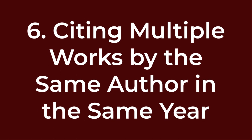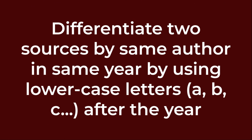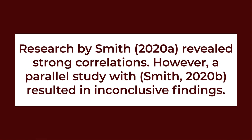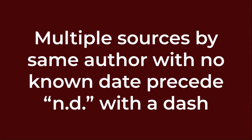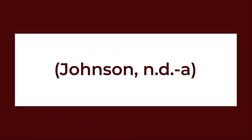Number six: citing multiple works by the same author in the same year. If you have two sources by the same author in the same year, use lowercase letters a, b, c, etc. after the year to order the entries in both the reference list and in the in-text citation. For example: Research by Smith (2020a) revealed strong correlations. However, a parallel study (Smith, 2020b) resulted in inconclusive findings. If you have multiple sources from the same author with no known date, precede n.d. with a dash and a lowercase letter. For example: (Johnson, n.d.-a).